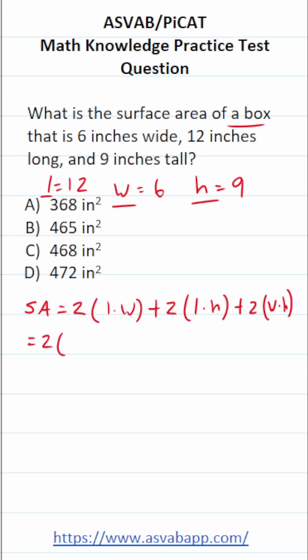Now that we have the formula down, let's go ahead and plug things in and solve accordingly. Length times width is going to be 12 times 6 plus 2. Length times height is going to be 12 times 9 plus 2. What is width times height? That's going to be 6 times 9.